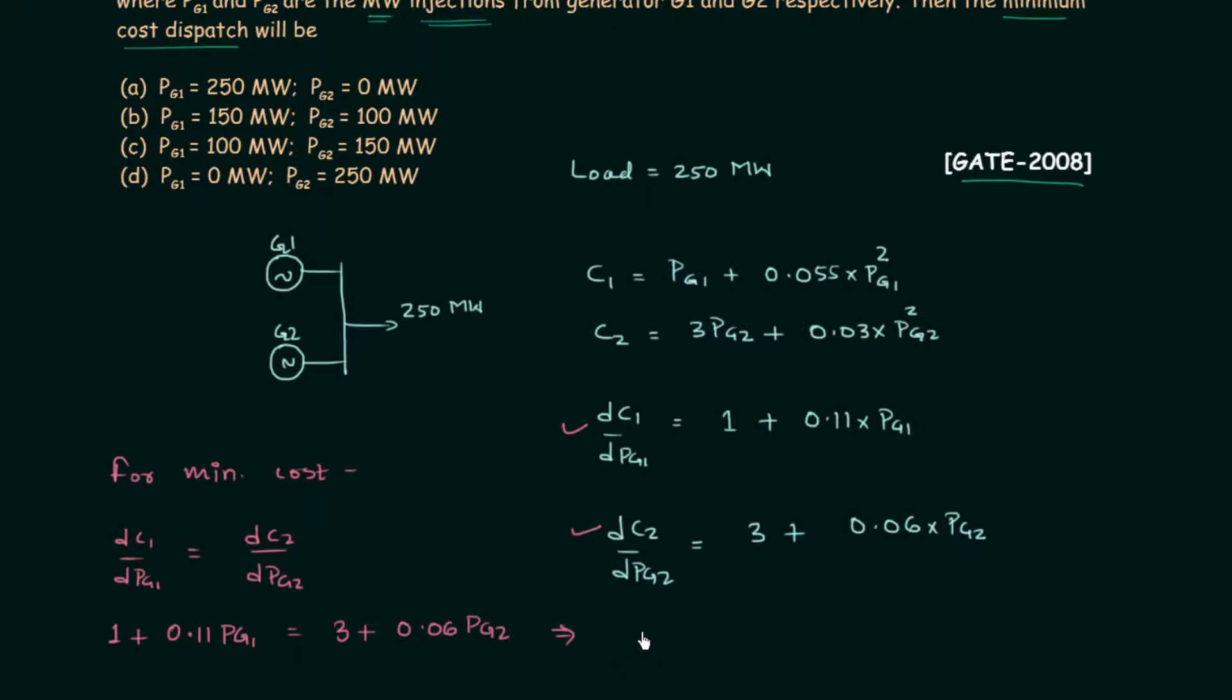I will write down the equation directly: 0.11 times PG1 minus 0.06 times PG2 equals 2. Let's call it equation 1. This is the first equation and from here we can get our second equation.